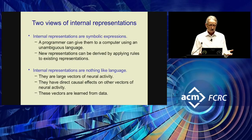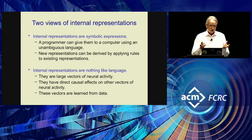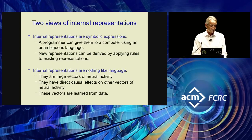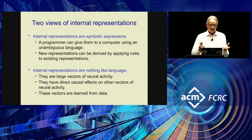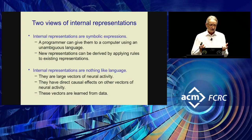The symbolic paradigm thinks that you should use symbolic expressions. You can give these to the computer if you invent a good language to express them in, and you can get new expressions within the computer by applying rules. The biological paradigm thinks the internal representations are nothing at all like language — they're just big vectors of neural activity. These big vectors have causal effects on other big vectors, and these vectors are going to be learned from data.